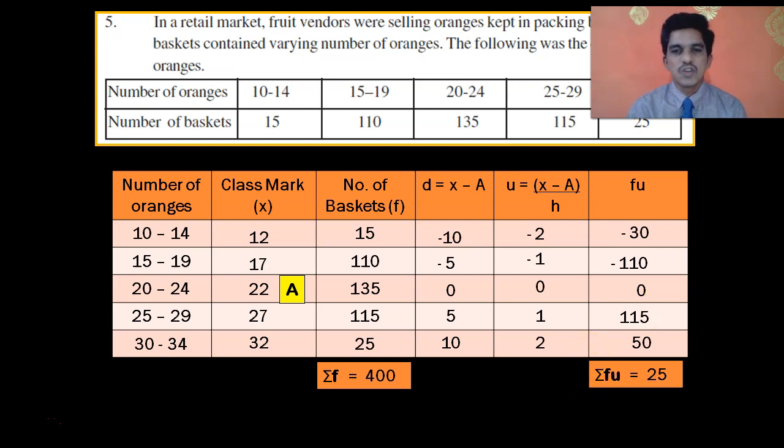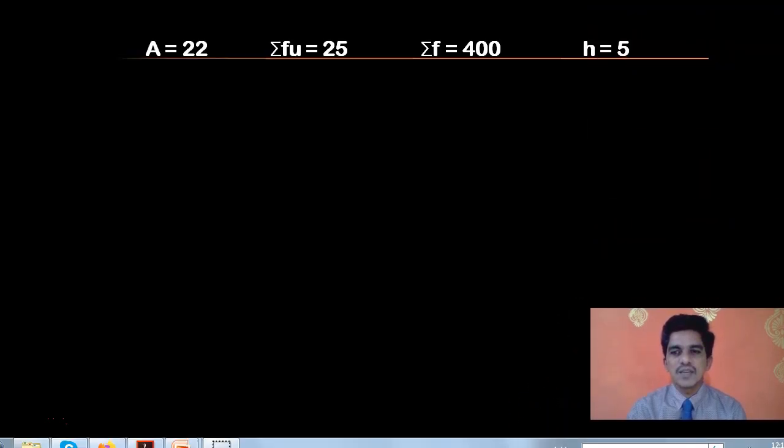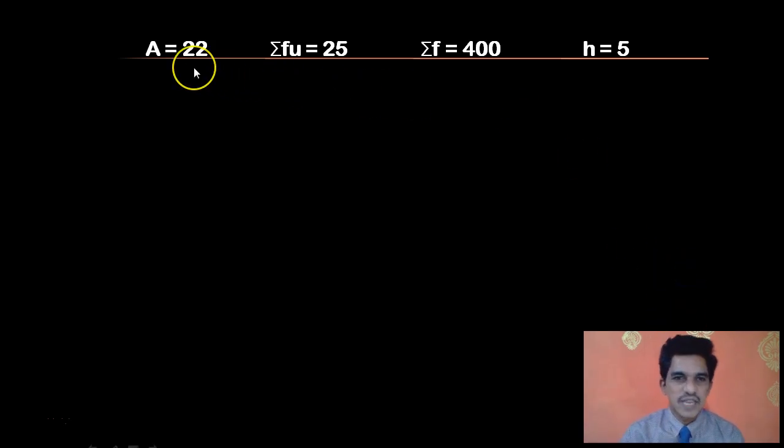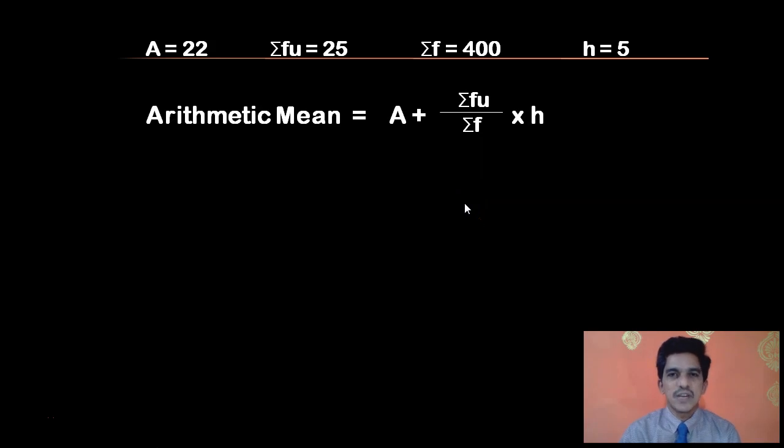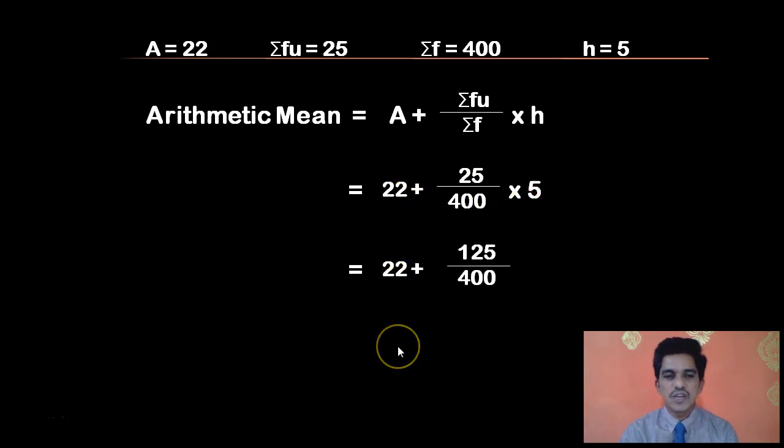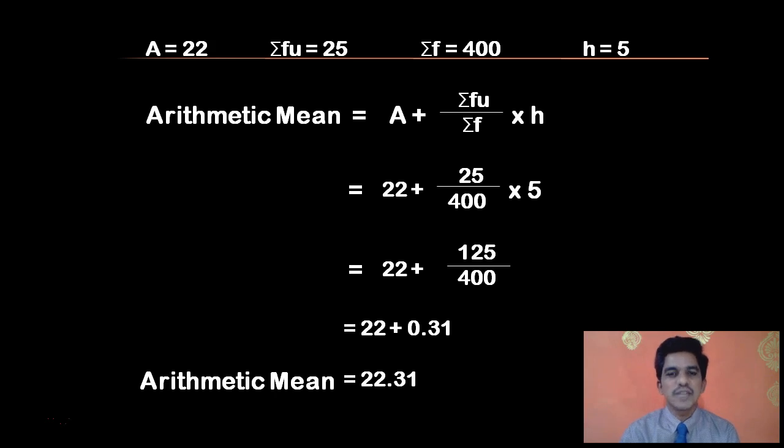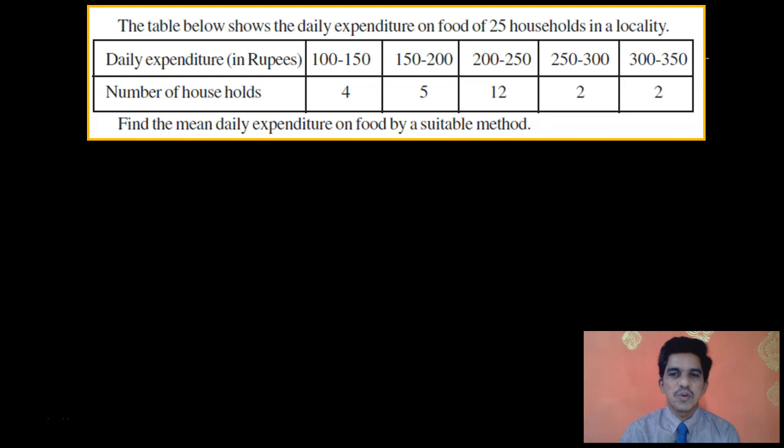Now we have all the values. You can calculate the arithmetic mean using the formula. So, here are the values: A is 225, sigma fu is 25, sigma f is 400 and h is 50. Once again, the formula is: Arithmetic mean is A plus sigma fu by sigma f into h. So, substituting the values, you have 225 plus 25 by 400 into 50. You can cancel the terms. 25 into 50 is 1250 by 400. 25 by 400 is approximately minus 7 divided by 25, which gives minus 14. Actually, it's 225 plus 25 by 400 times 50, which equals 225 plus (-7/25)*50 = 225 + (-14) = 211. Wait, let me recalculate: 225 + (25/400)*50 = 225 + 0.0625*50 = 225 + 3.125. Actually for this problem, the final arithmetic mean is 22.31. This is how you calculate the arithmetic mean using step deviation method.